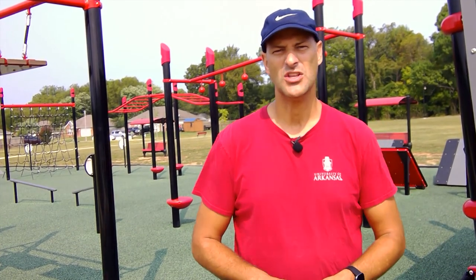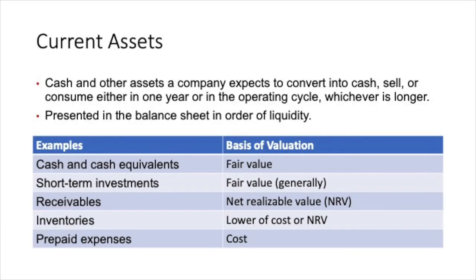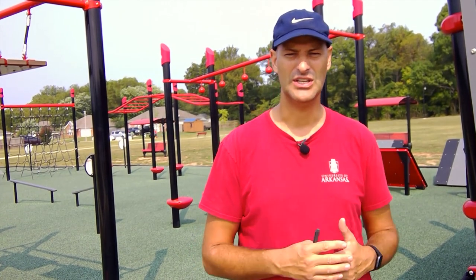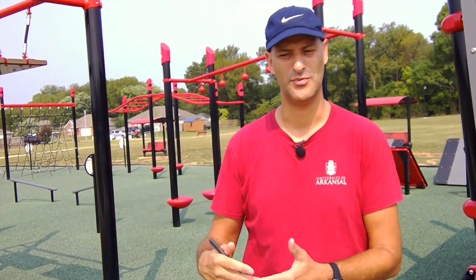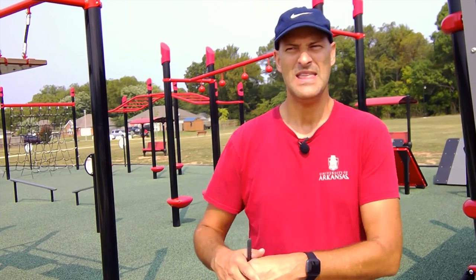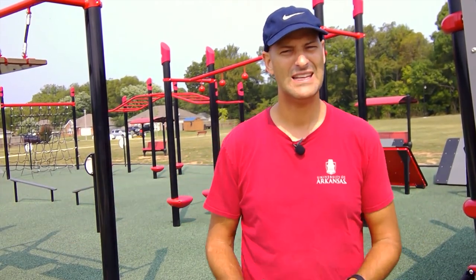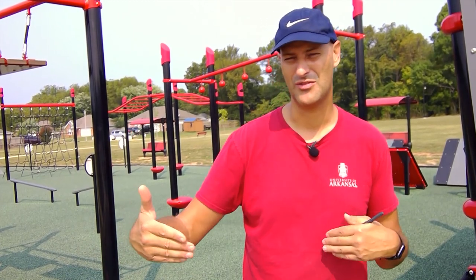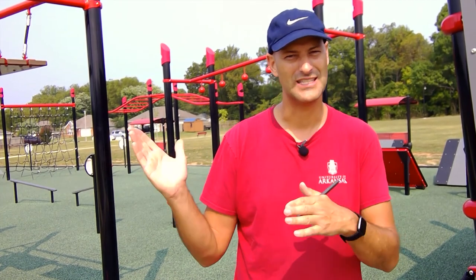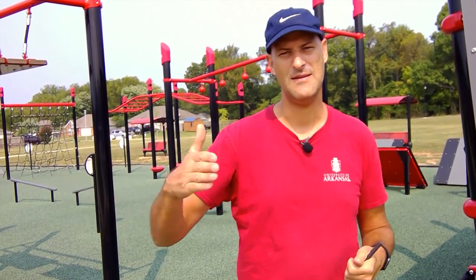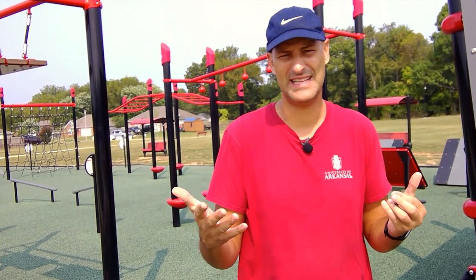Drilling into current assets: these are cash and other assets the company expects to convert into cash, sell, or consume within one year or within the operating cycle, whichever is longer. Most companies have an operating cycle of less than a year. For a company like Walmart or Tesla, the operating cycle involves buying inventory or materials, building or stocking the product, and selling it. Walmart's operating cycle is probably 30 to 60 days. That's part of what's made Walmart so successful — phenomenal management of their supply chain.